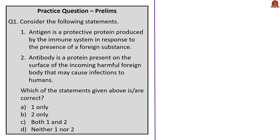Moving to the practice question discussion. The first question on antigen-antibody: both statements were incorrect because the explanations of antibody and antigen had been interchanged. Antigen is the protein on the surface of incoming bacteria, viruses, or fungi, while antibody is the protein working against the foreign substance. Since both statements are wrong, the correct answer is option D — neither 1 nor 2.